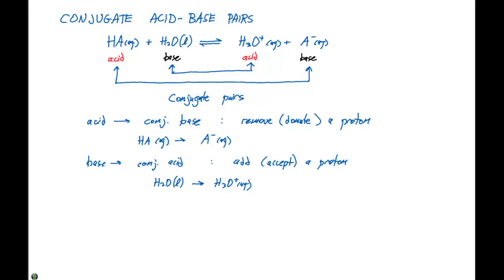Both of these particular reactions have to happen with each other. They can't just happen by themselves. We can't remove a proton without adding it to something else. So when the equilibrium's established, we have these particular conjugate pairs.